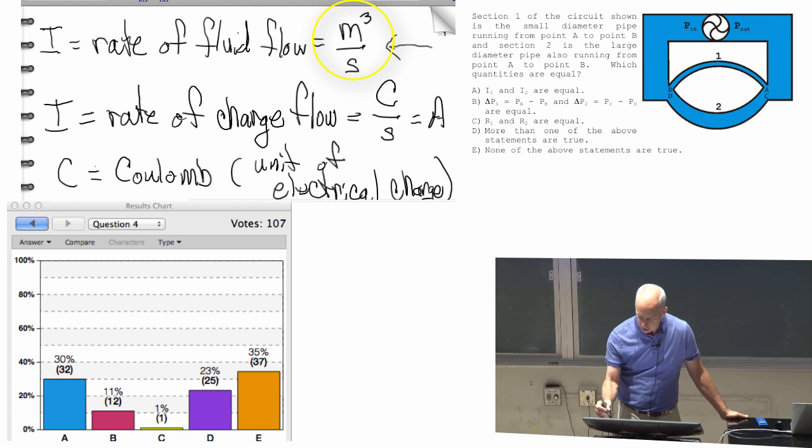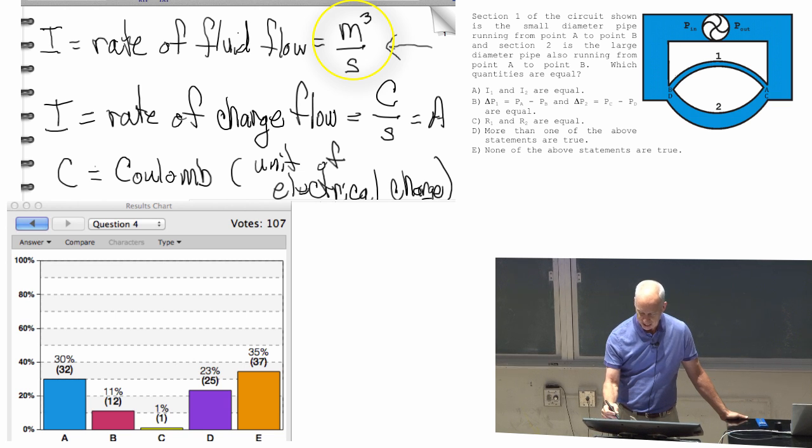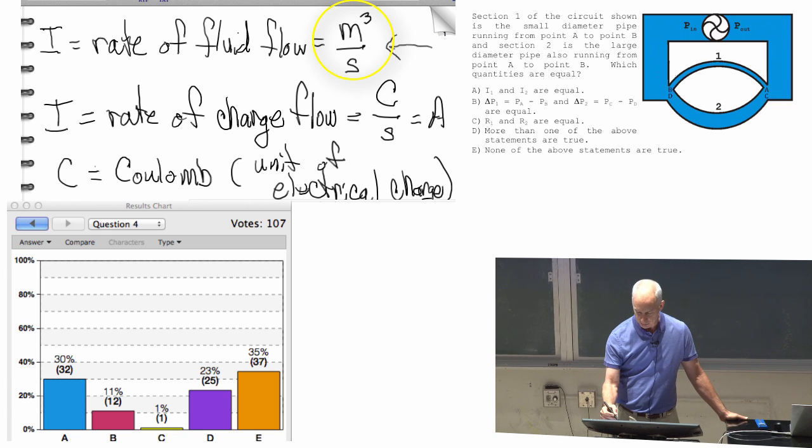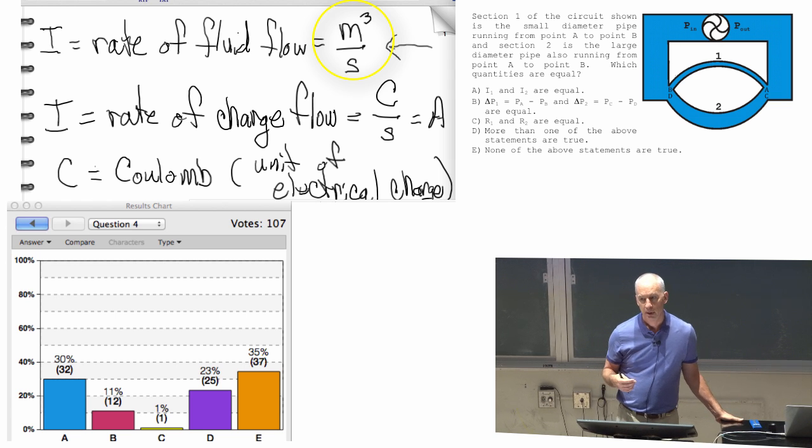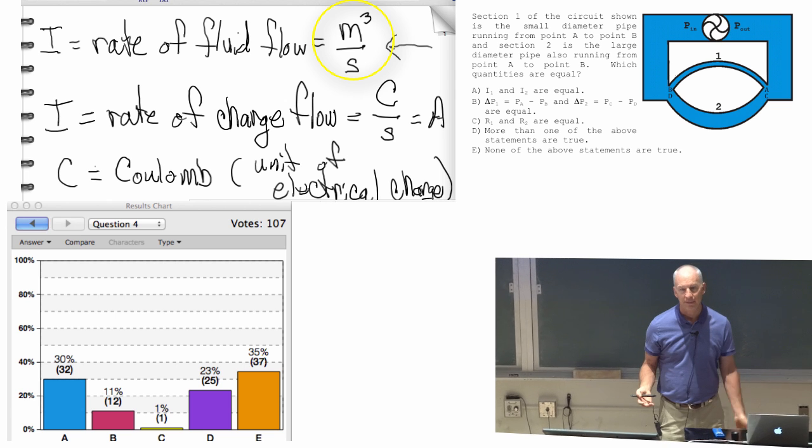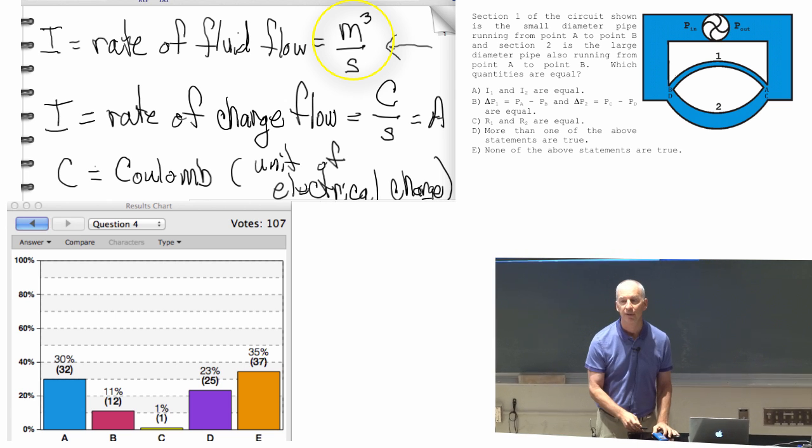So if these were two straws hooked up to your mouth and your mouth was right here, how much fluid per second, the volume per second from this little pipe and the volume per second from the big pipe shows up in your mouth. So current is the amount of stuff flowing when you're talking about fluids.